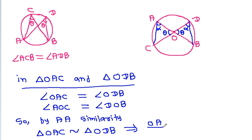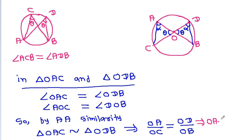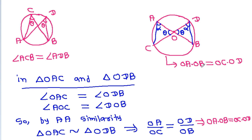From the similarity, OA divided by OC equals OD divided by OB. Therefore OA times OB equals OC times OD.